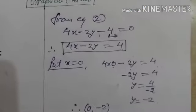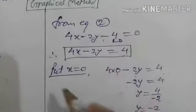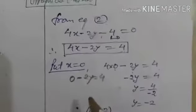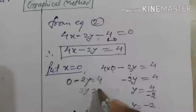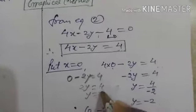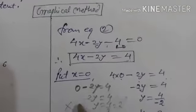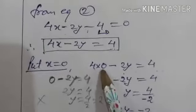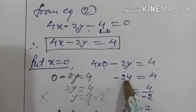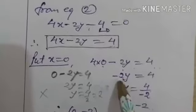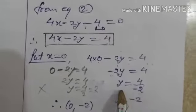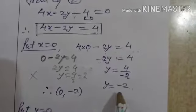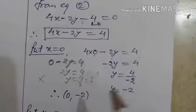Hello guys. In this question, students generally make a mistake here. When x equal to 0: 4 into 0 minus 2y equals 4. Some students write directly 2y equal to 4 and get y equal to 2 — but this is wrong. Don't ignore the minus sign. Be very conscious: minus 2y equals 4, so y equals 4 divided by minus 2, giving y equal to minus 2. Be very careful with this minus sign. Thank you, guys.